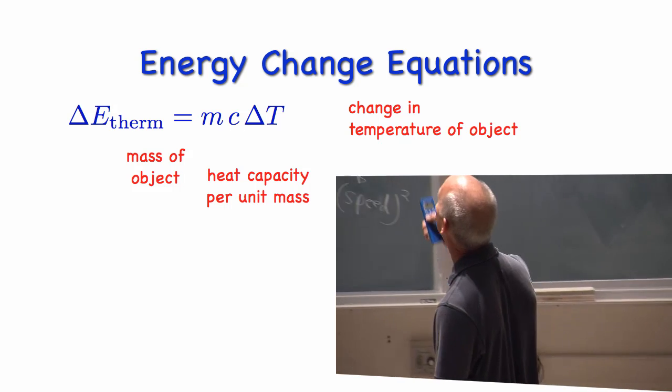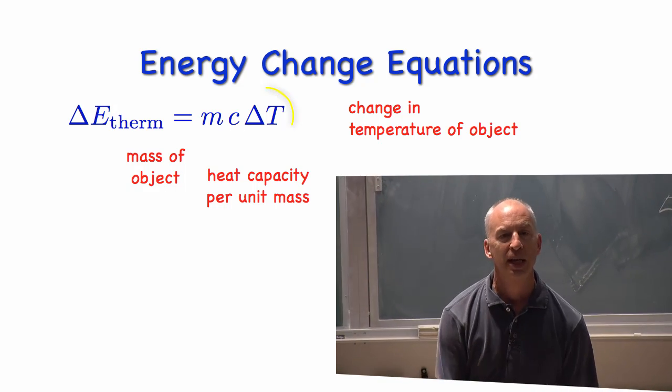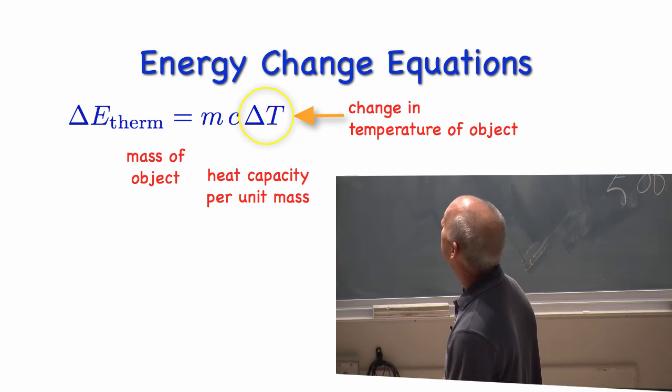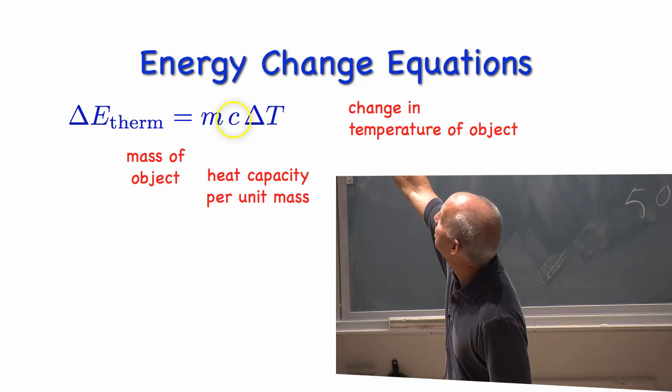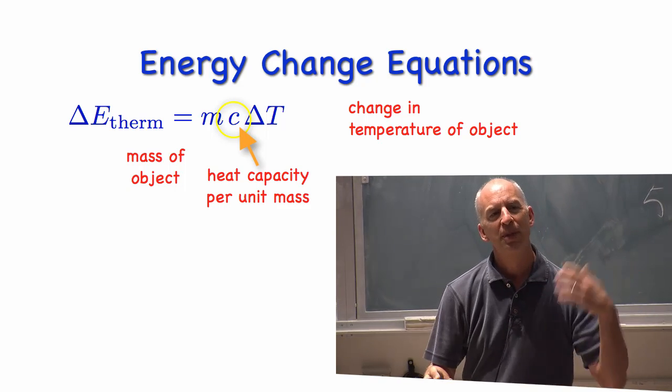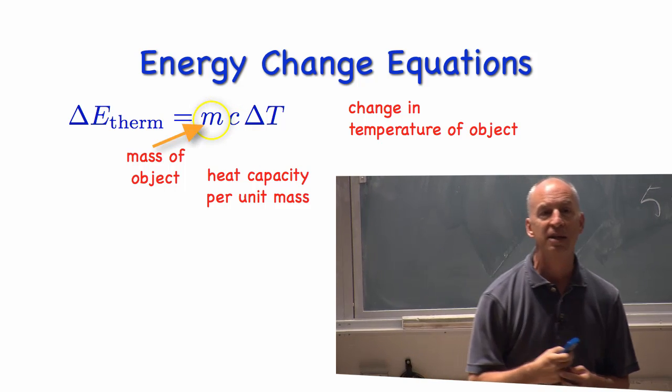You've probably seen these equations before. Thermal energy changes depend on temperature changes. And the proportionality constant depends on the material, so you look up the specific heat capacity of the material, but it also depends on the mass of the object.